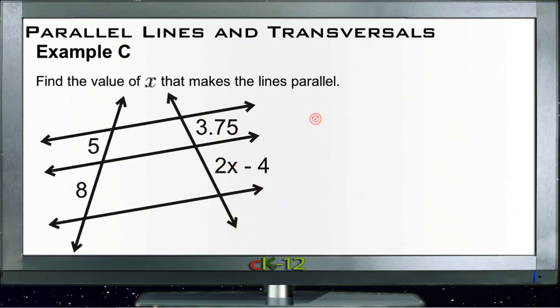Okay, so we know then that 5 should compare to 8 in the way that 3.75 compares to 2x minus 4, assuming these are parallel. So we'll write that out. We'll say 5 over 8 needs to be the same thing as 3.75 over 2x minus 4.